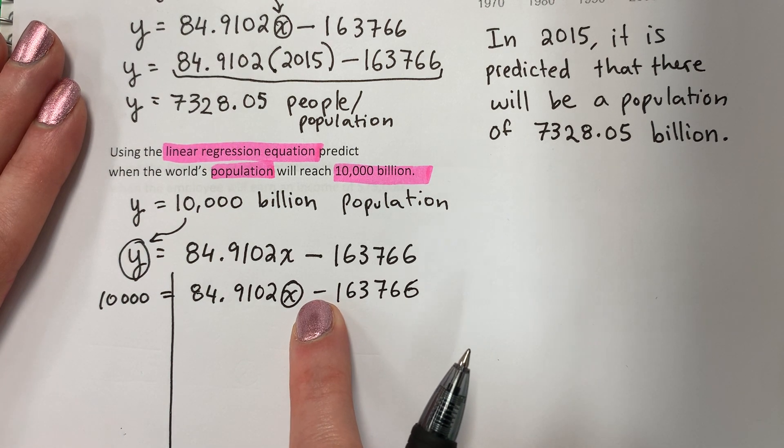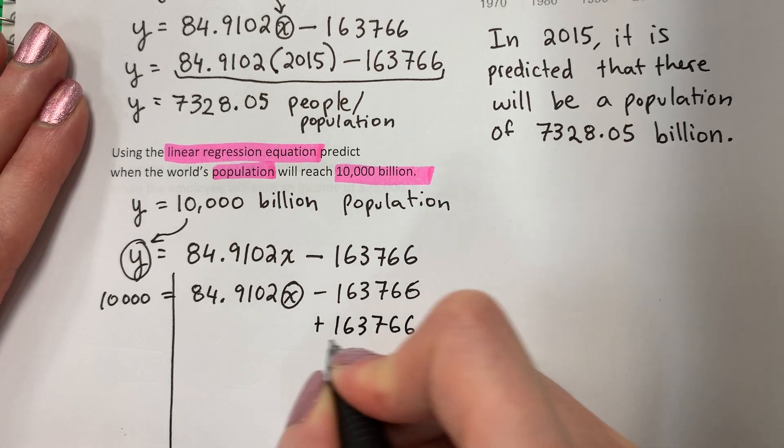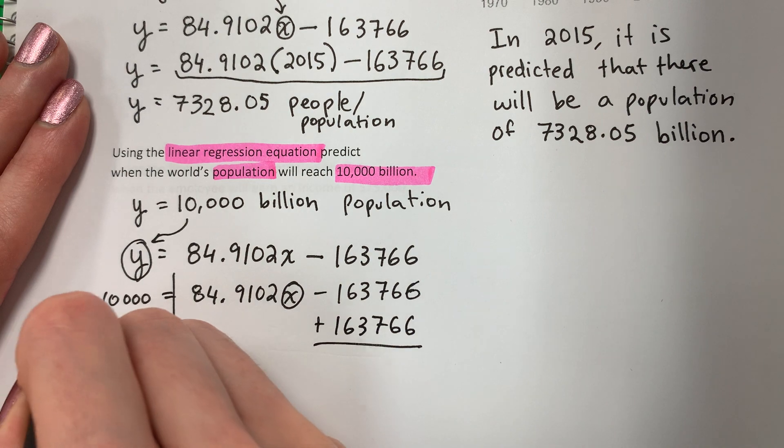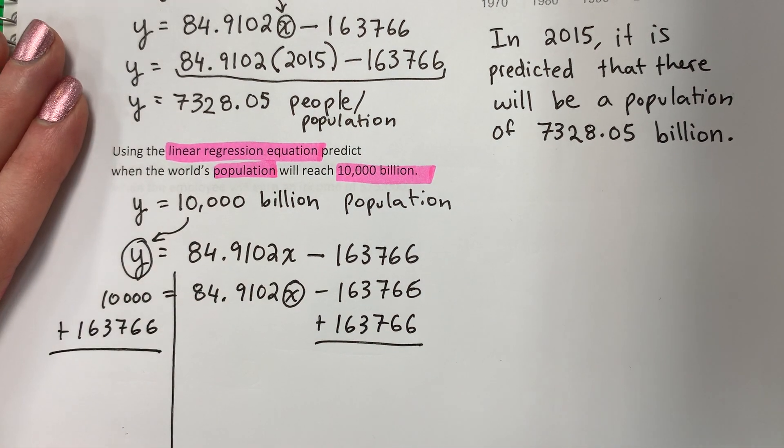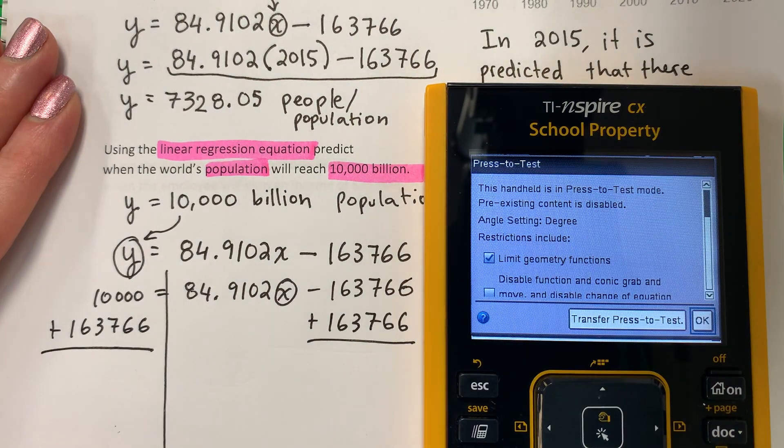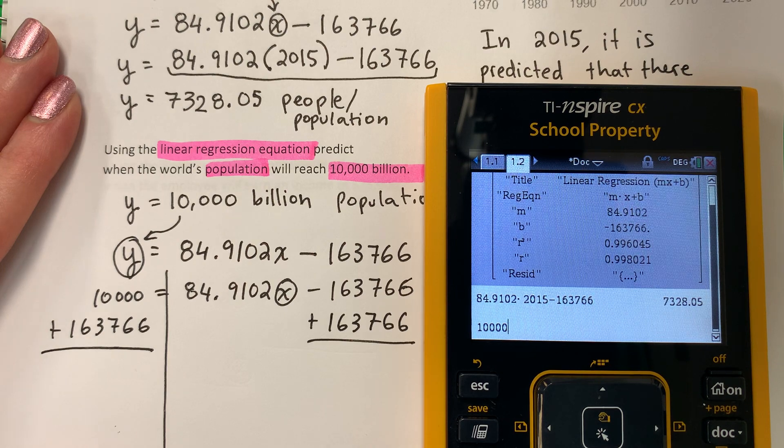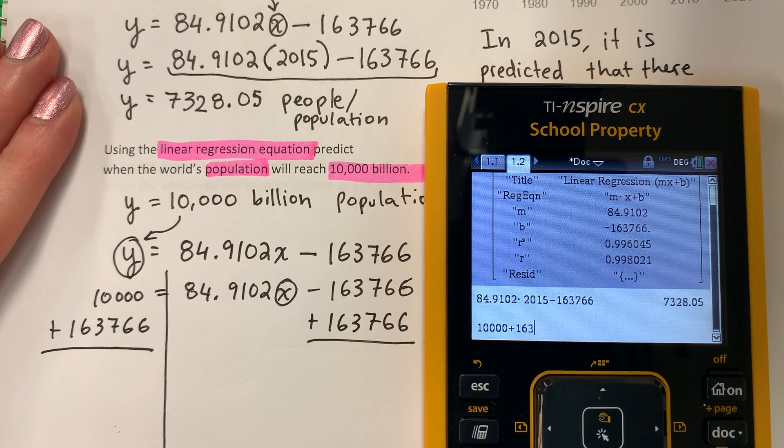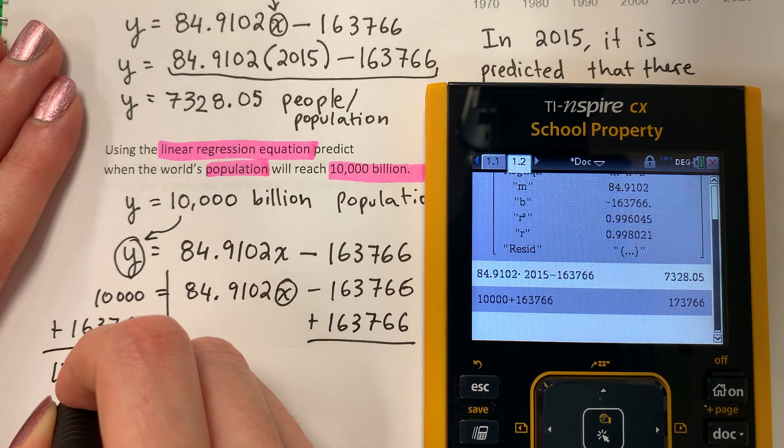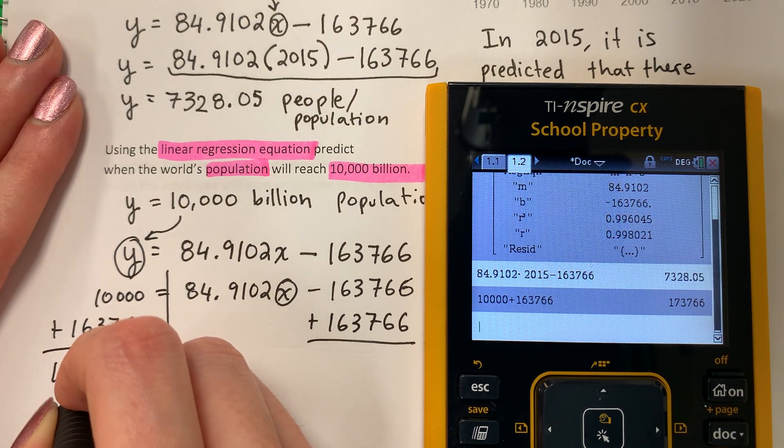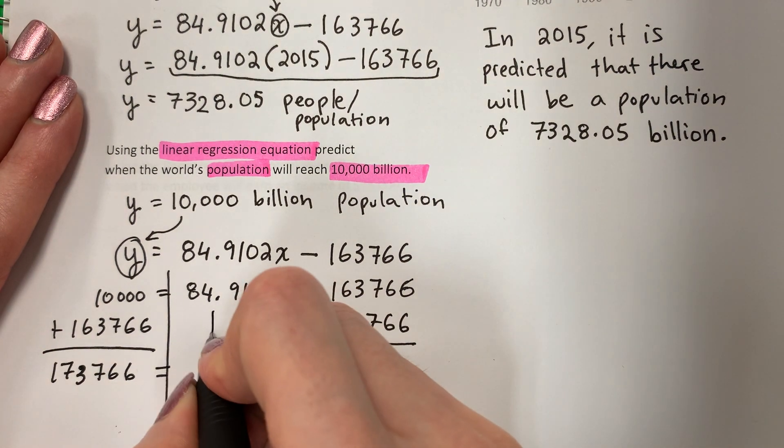The opposite of minus is plus. El opuesto de menos es más. Copy horizontal. Let's go ahead and put that in the calculator. 10,000 plus 163,766. That is 173,766. Copy this number down.